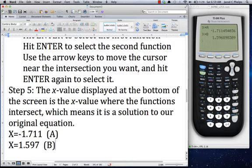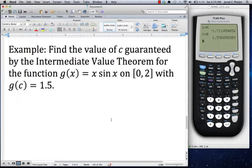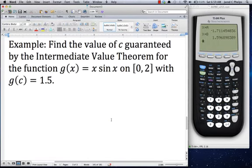Now I had said that I also wanted to go through an intermediate value theorem problem. So I have this example set up. I want us to find the value of c guaranteed by the intermediate value theorem for the function g(x) = x sin x on the interval from 0 to 2, and what I want is for g(c) to equal 1.5.